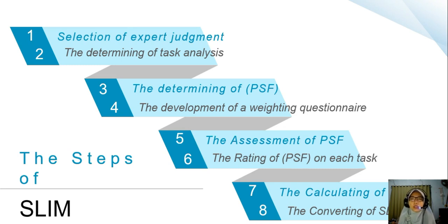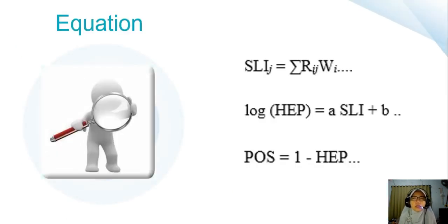The seventh step was the calculating of the SLE value, which illustrates the probability of success in avoiding accident occurrence. The last step was converting the SLE value to the HEP value. The equations used in this research include the relationship between SLE and the log of HEP to obtain the HEP value, and the equation for POS.